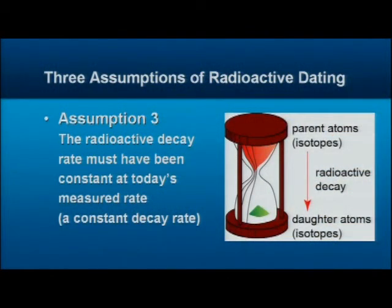If it isn't a closed system that can't be contaminated, you can't use that clock accurately. Thirdly, you have to know the rate of radioactive decay — it must have always been constant at today's measured rate. Scientists have only been measuring radioactive decay for the last 100 years or so, yet they've assumed those decay rates have been constant for millions and billions of years — an enormous extrapolation of five orders of magnitude.